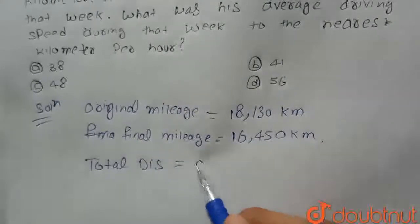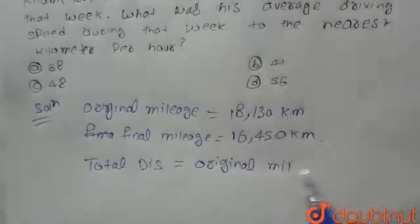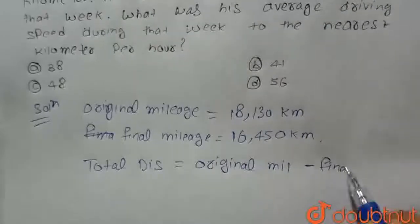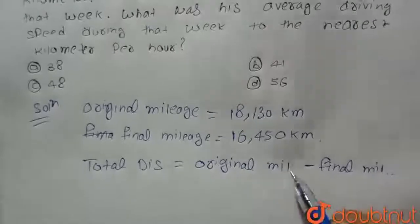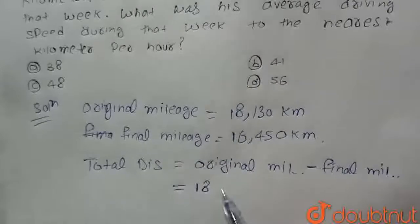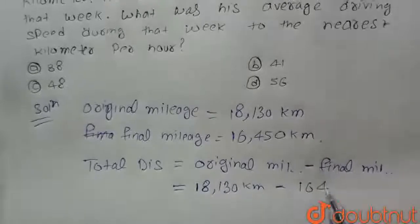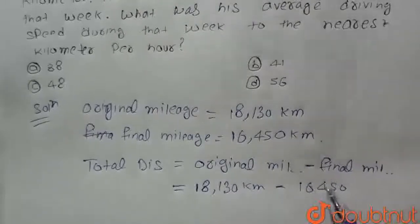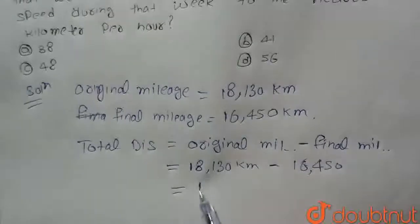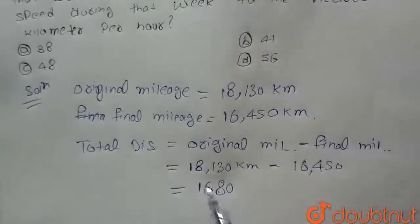Then we will get the total distance — original mileage subtract the final mileage. Let's see how much is the total distance: that is 18,130 km minus 16,450, which equals 1,680 km.